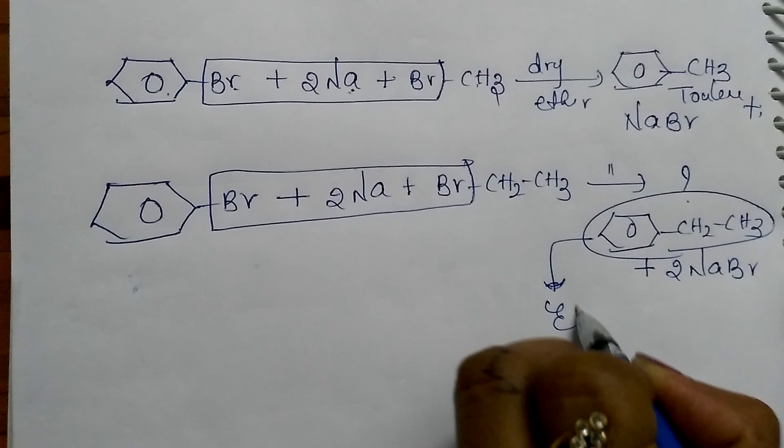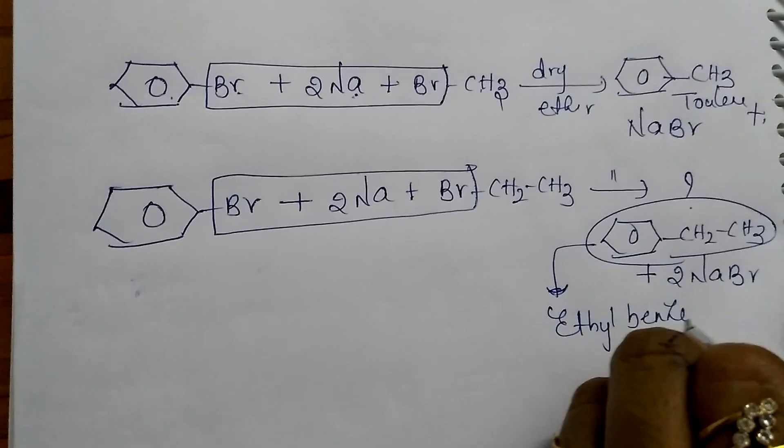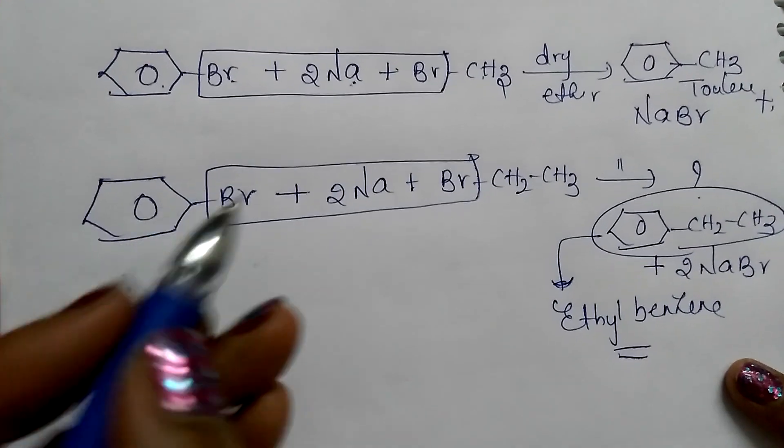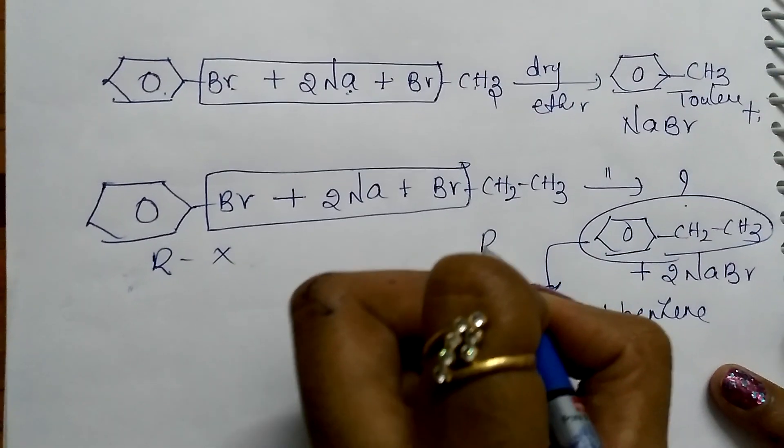In such a way we can get ethyl benzene. This aryl halide and this alkyl halide are both different.